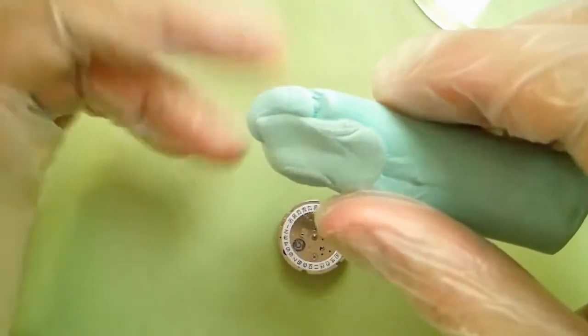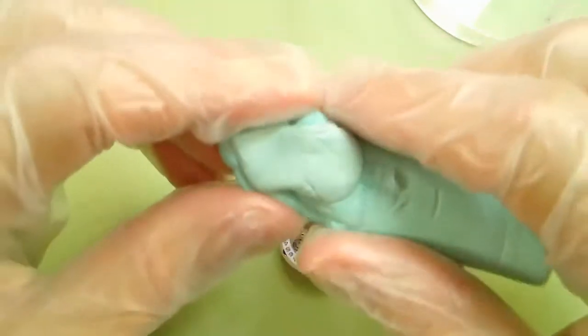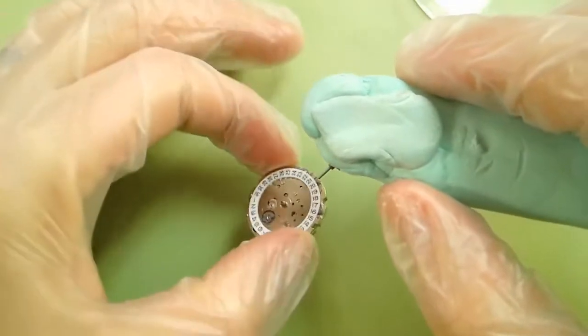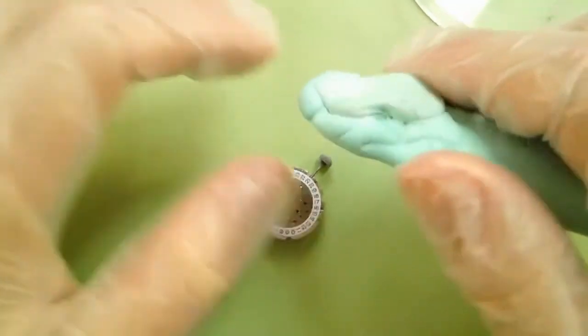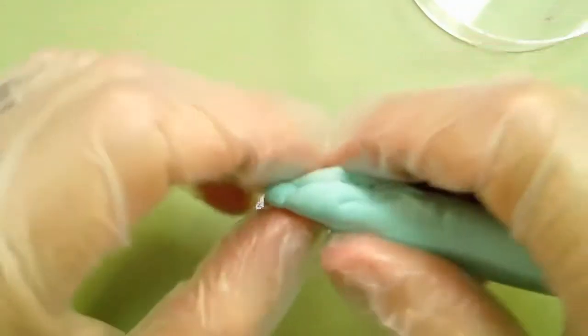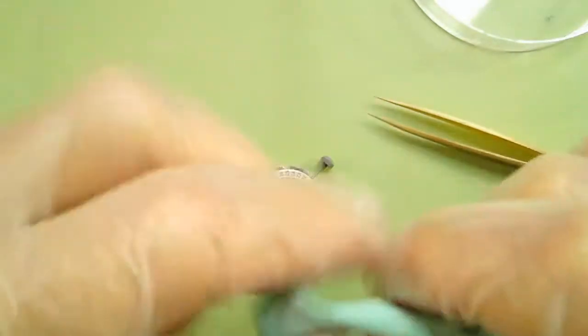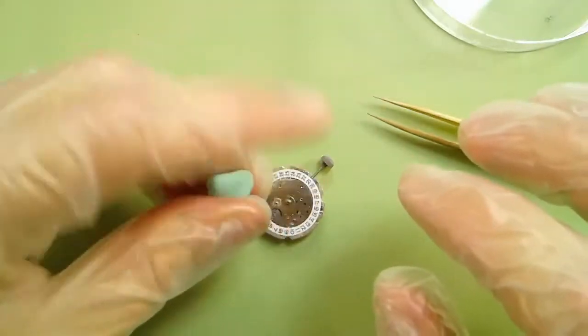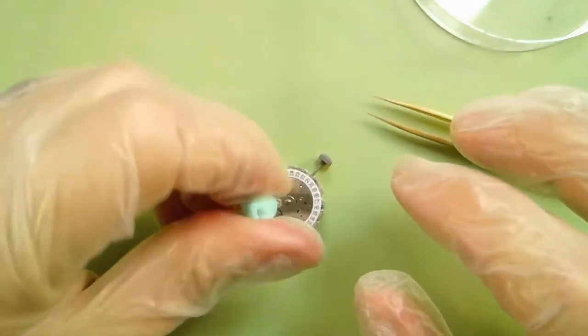So I found the easiest way to install these dial feet screws is using the rodico putty. Just grab it, get a piece off—tiny piece, maybe a quarter of the size of the movement. Get it into a little ball.